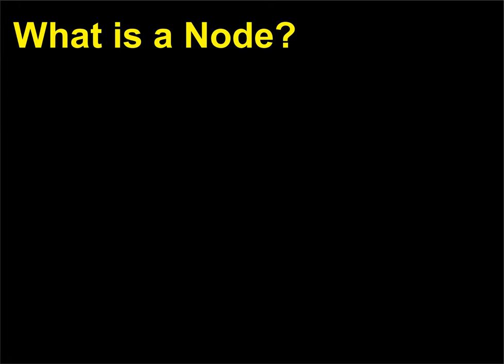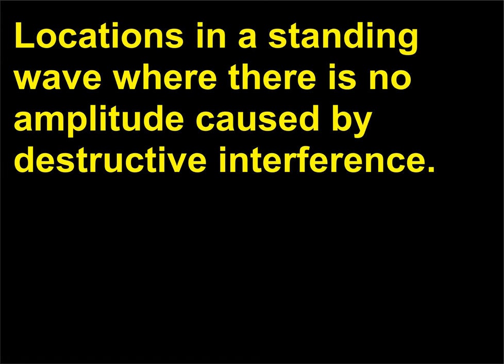What is a node? A node is a location in a standing wave where there is no amplitude, caused by destructive interference.